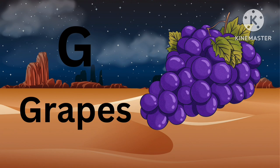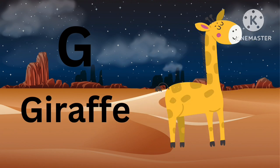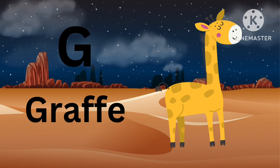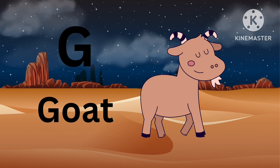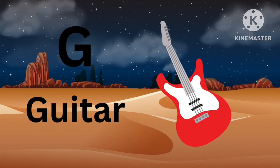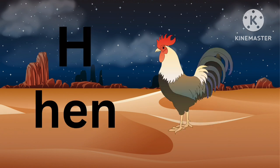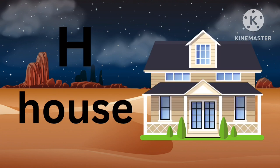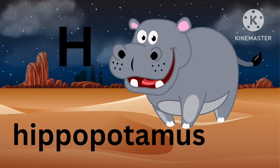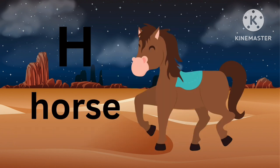G for Giraffe, G for Guava, G for Goat. H for Hen, H for Helicopter, H for House, H for Hippopotamus, H for Horse.